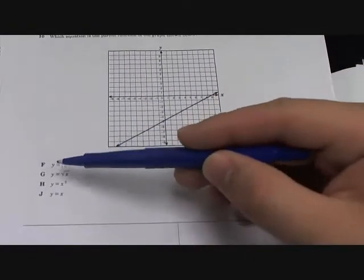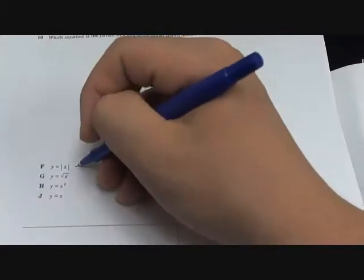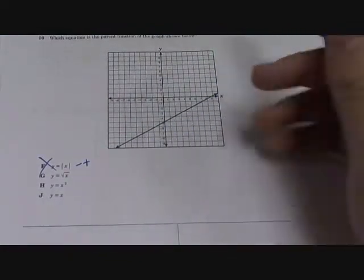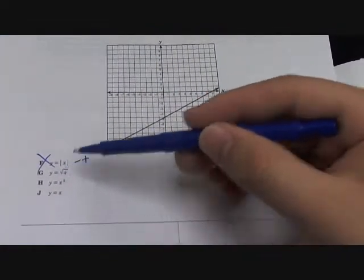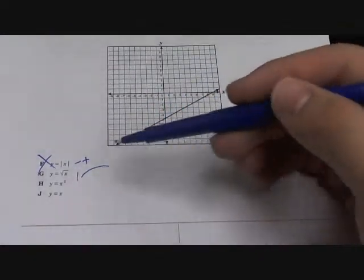So y equals absolute value of x - remember absolute value always gives positives, so this one can't be it because we have negative values. Square root of x, remember, looks... again cannot be it.